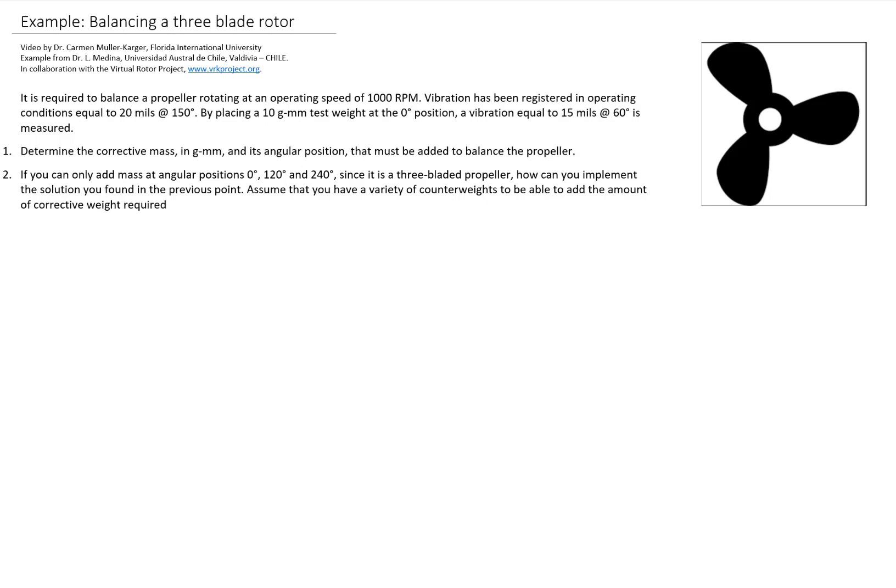It is required to balance a propeller rotating at an operational speed of 1000 RPM. Vibration has been registered in operating conditions equal to 20 mL at 150 degrees. By placing a 10 gram millimeter test weight at the 0 position, a vibration equal to 15 mL at 60 degrees is measured.